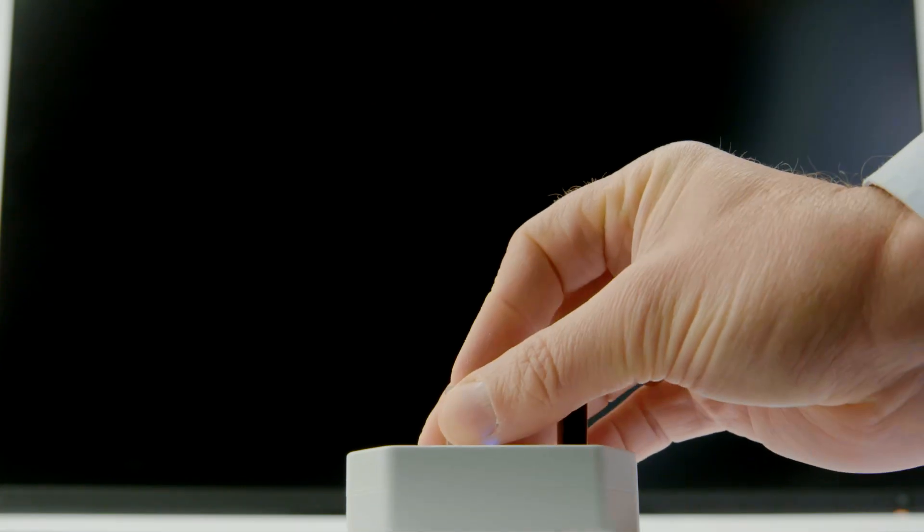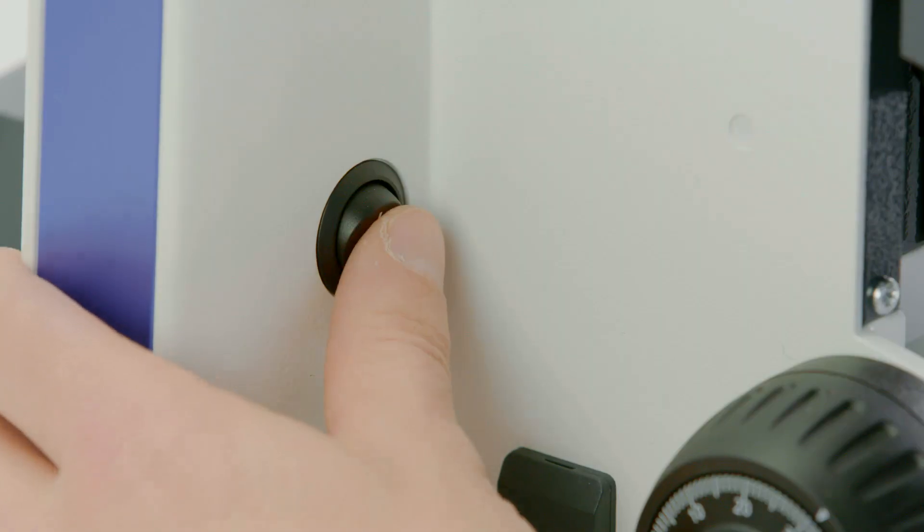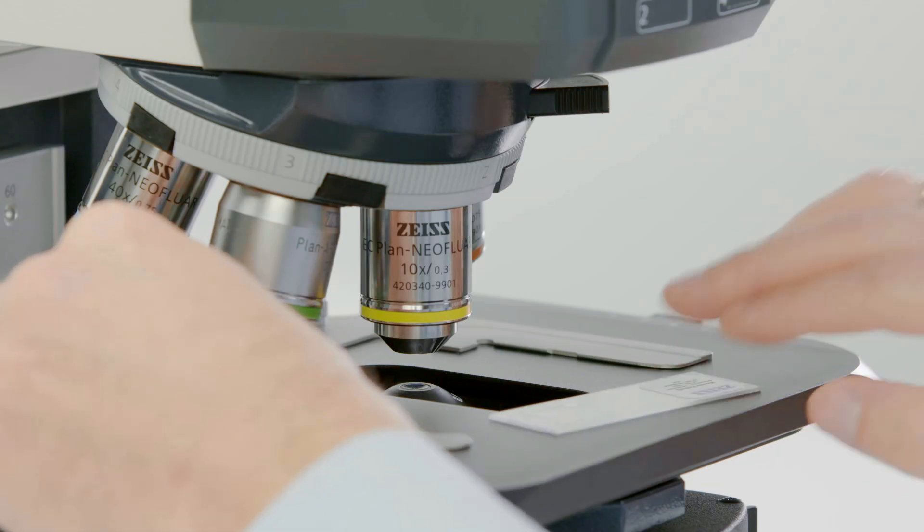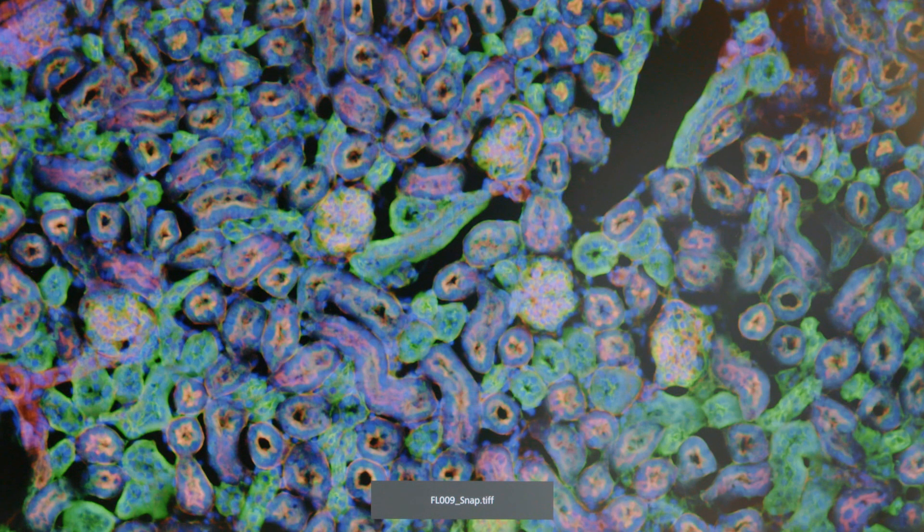Insert a USB stick into your smart AxioCam microscope camera. Switch on the microscope and place your sample on the stage. The sample shown is a mouse kidney section stained with DAPI, AF488, and AF568.